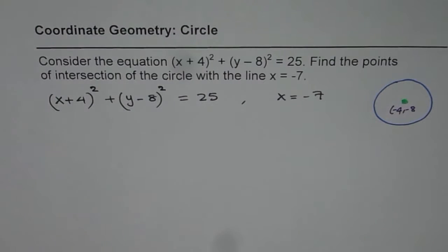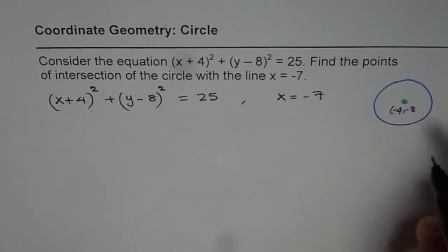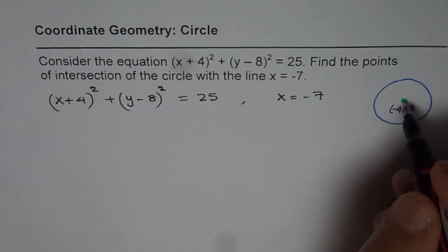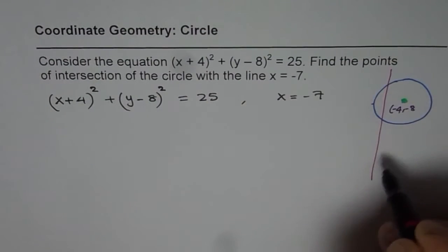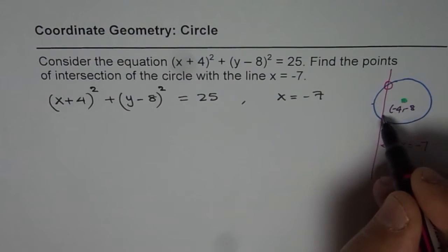The vertical line is at x = -7. So the line goes like this. This line x = -7 intersects the circle, and we need to find these 2 points.